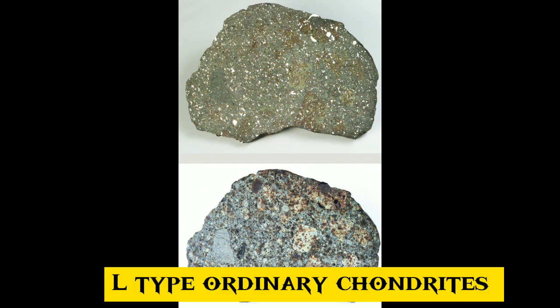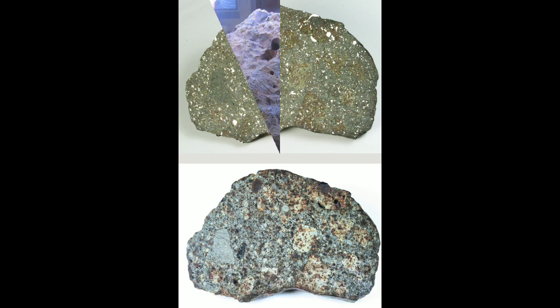21. The L-type ordinary chondrites are the second most common group of meteorites, accounting for approximately 35% of all those catalogued and 40% of the ordinary chondrites. Parent body: possibly 433 Eros, 8 Flora, or the Flora family as a whole. Class: ordinary chondrite. Subgroup: L3.